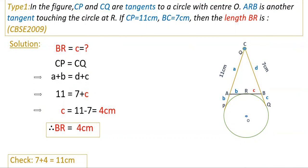Here CP and CQ are tangents to the circle, and ARB is another tangent touching the circle at point R. Given values: CP = 11 cm and BC = 7 cm. We need to find BR. Let us assume AC = A, AP = B, and the other segments as C and D. Since tangent lengths from an external point are equal, lengths B and B are equal, and C and C are equal. We need to find BR, which is the value of C.